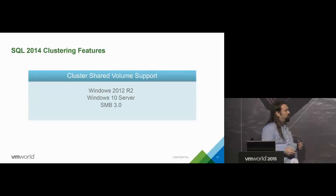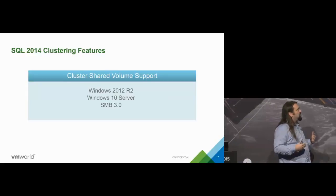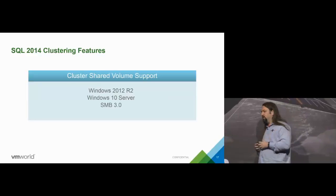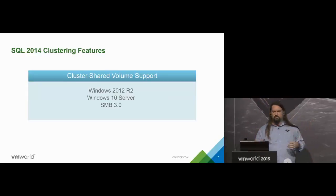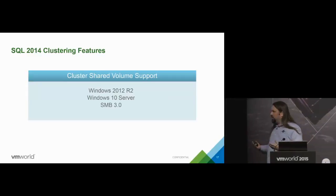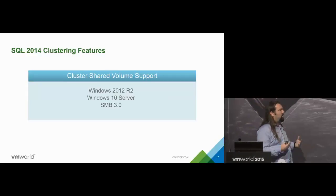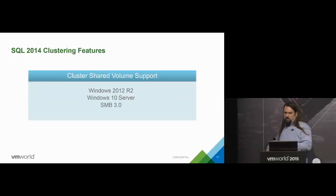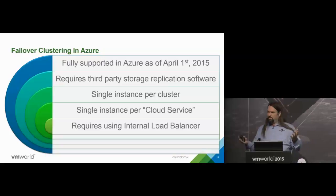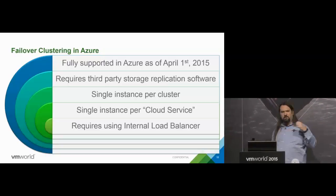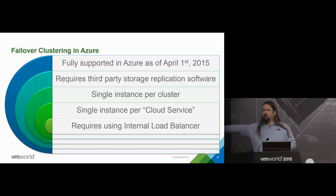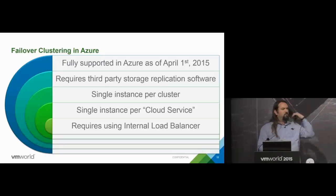Cluster Shared Volumes (CSV) were introduced with Windows 2012 R2 and require SMB3. This gives you the ability to have more of a clustered environment with just local VMDKs without having to do the harder things in failover clustering. Failover clustering is also supported in Azure, which becomes really interesting as a DR target — you can actually build a failover cluster on-premises and stretch it out to Azure fairly easily. There are some requirements within Azure to make that work, but it's fairly straightforward to set up.